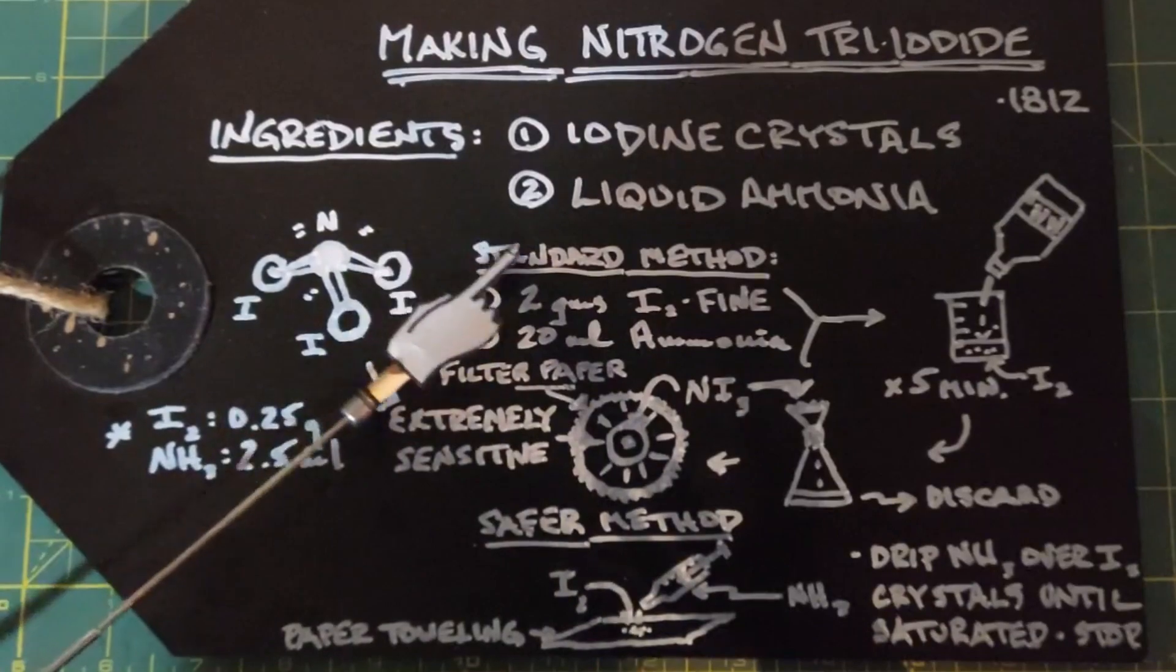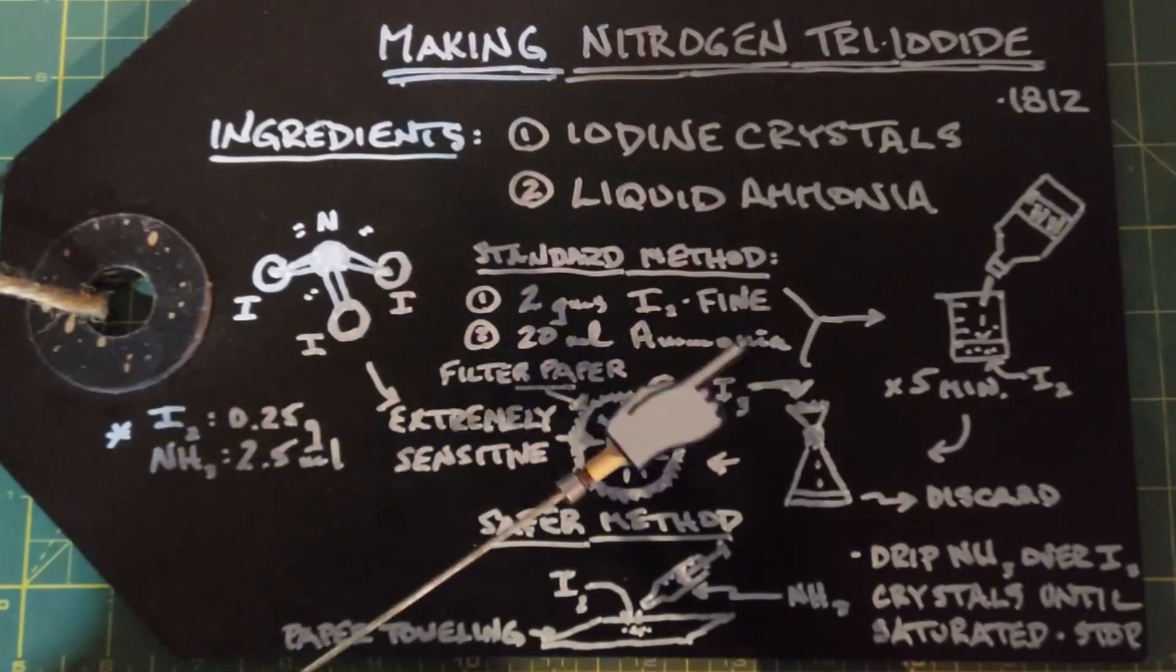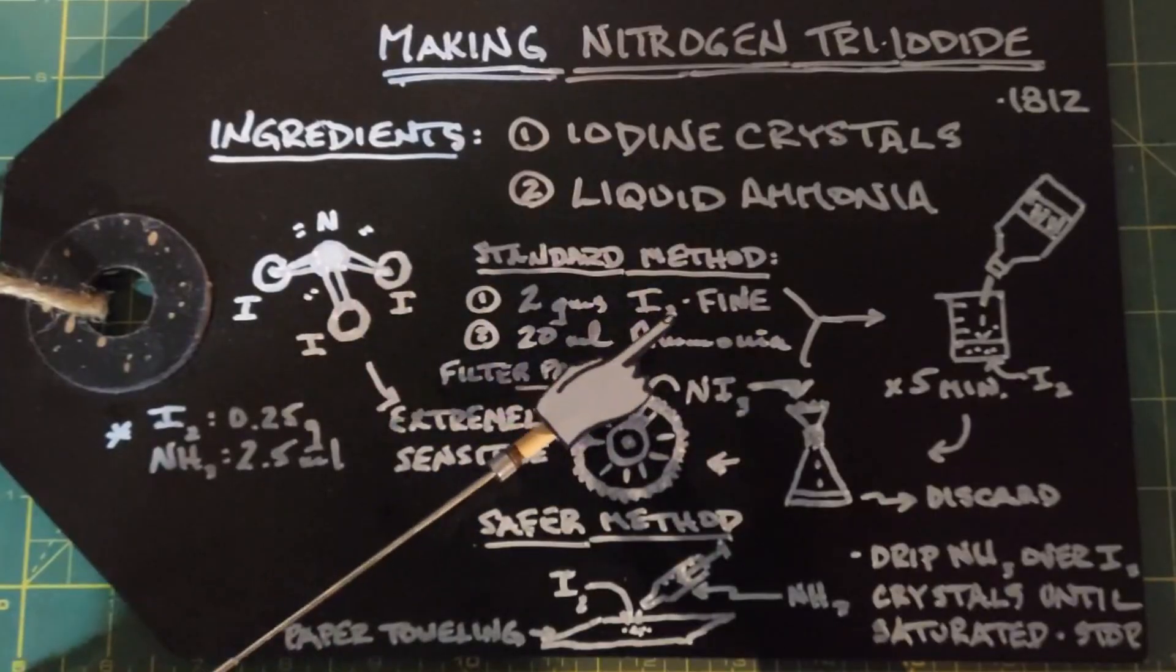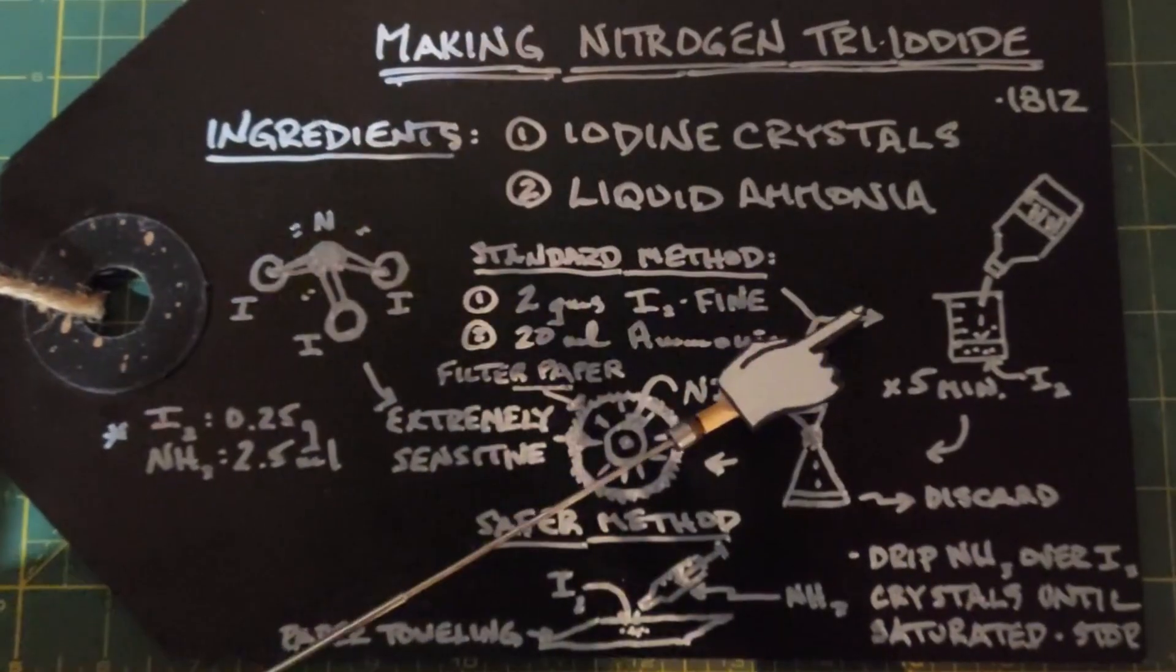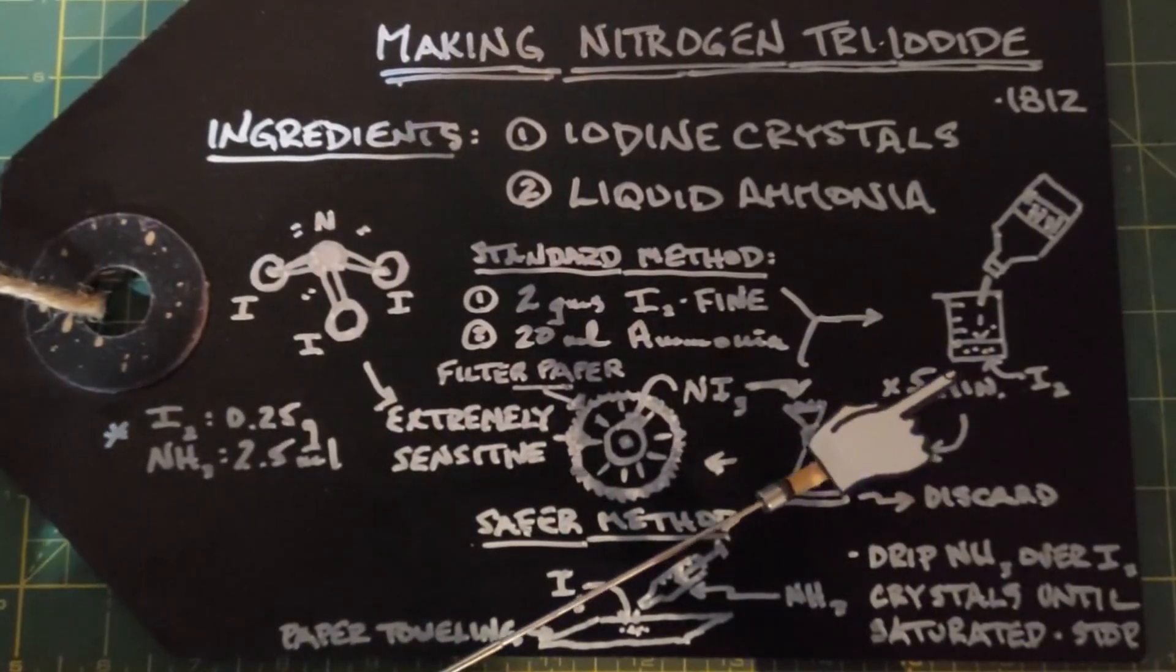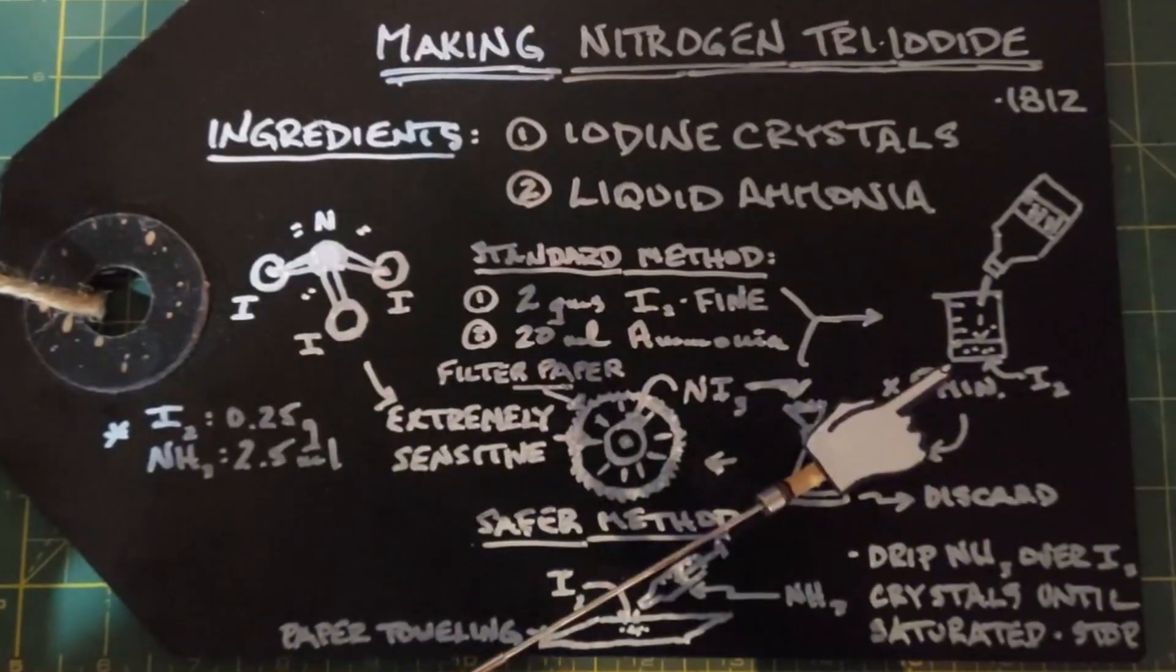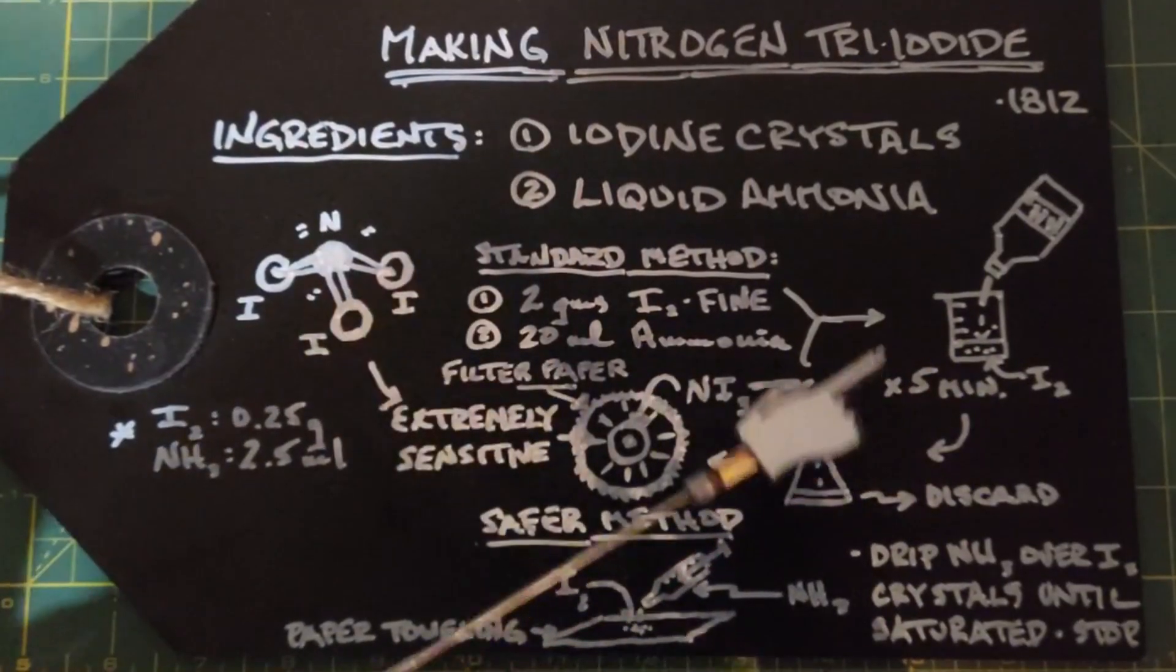For the standard method you need two grams of iodine, and for every two grams you need 20 milliliters of ammonia. You want your iodine crystals to be fine, so if they're larger crystals, grind them. Take a glass container, put your fine iodine crystals on the bottom, and pour over that your 20 milliliters of ammonia and let it sit for five minutes.